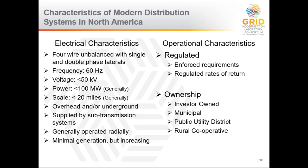Distribution circuits are almost always operated radially, meaning there is a single path for power to flow from the substation to each house. That's cost-effective but has reliability issues — if there's a break, there's no power — though these can be rerouted manually and sometimes automatically. Historically these systems were not designed to have any generation, but this is increasing. In areas such as the Carolinas, Hawaii, California, and others, we're seeing a lot of solar generation, which is fundamentally changing the characteristics.